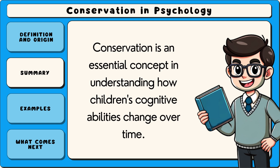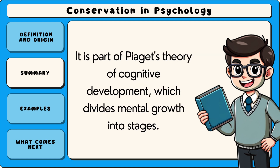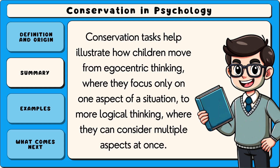Conservation is an essential concept in understanding how children's cognitive abilities change over time. It is part of Piaget's theory of cognitive development, which divides mental growth into stages. Conservation tasks help illustrate how children move from egocentric thinking, where they focus only on one aspect of a situation, to more logical thinking, where they can consider multiple aspects at once.